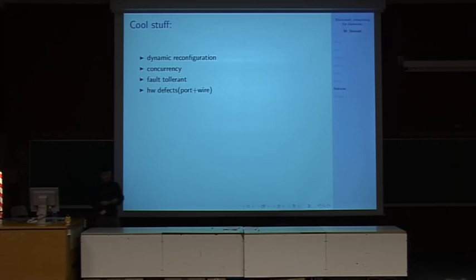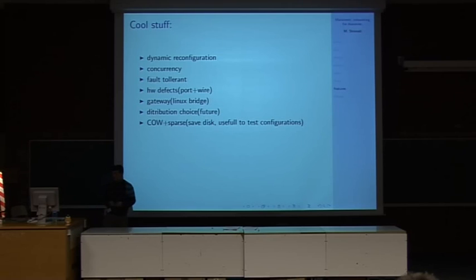Then we have the hardware defects in both port and wires. As we saw earlier, we have the gateway to connect to your OS machine. We have the distribution choice, or at least we will. And we have the COW-plus file system. Basically, it allows us to save a lot of disk space because we are talking about GNU Linux distribution file system, that means 300 megabytes. It's not really lightweight. And it allows us also to make the snapshot that we saw earlier.